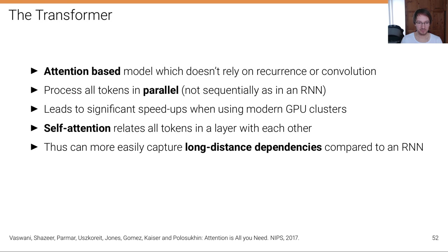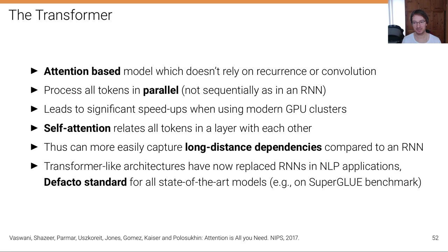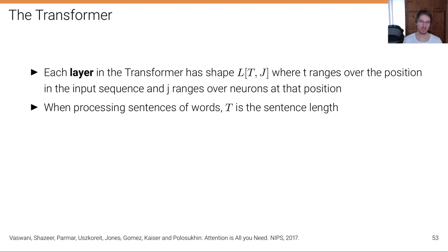Self-attention is what has been used in the transformer. Self-attention relates all tokens — all words in a layer — with each other. This means not only can it be computed in parallel, but it can more easily capture long-distance dependencies compared to an RNN, where long-distance dependencies must be carried over time steps through the hidden state with all the problems of managing gradients. Transformer-like architectures have now replaced RNNs in NLP applications almost entirely and are the de facto standard for all state-of-the-art models, for instance on the SuperGLUE benchmark.